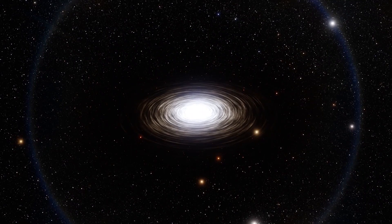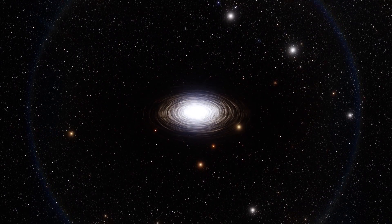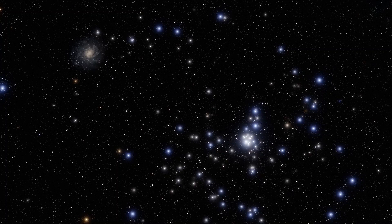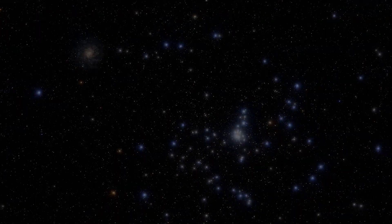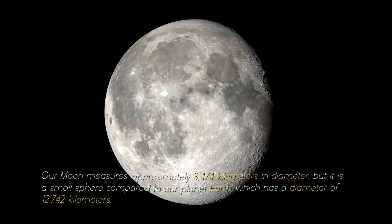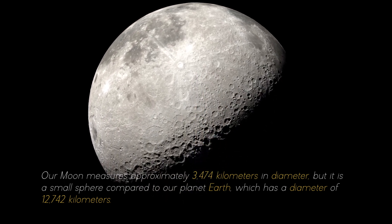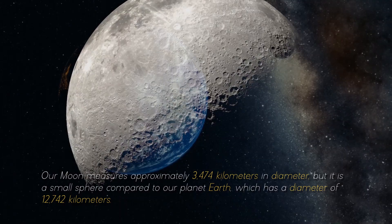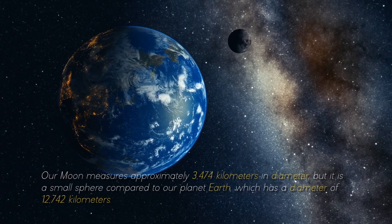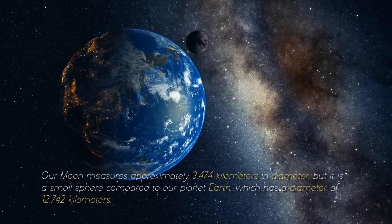To give you an idea of the colossal objects and structures that abound in the cosmos, it is necessary to start at the beginning. Our moon measures approximately 3,474 kilometers in diameter, but it is a small sphere compared to our planet Earth, which has a diameter of 12,742 kilometers.